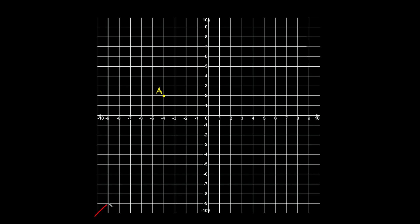Now we're going to switch it up. This is point A, and let's draw our line of reflection at an angle — specifically y equals x. Y equals x is a straight line with a slope of positive one that runs through the origin. To reflect point A across this line, we can count diagonal spaces. It's one, two, three diagonal spaces away, so point A prime on the other side would also be one, two, three spaces away. The straight line between the two points makes a perpendicular angle with the line of reflection.